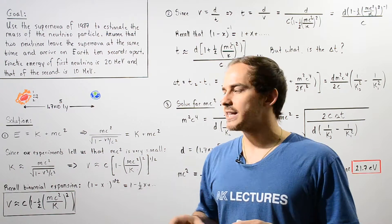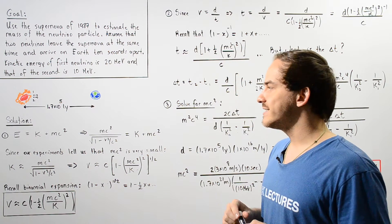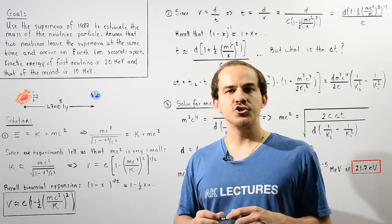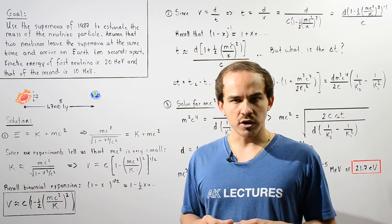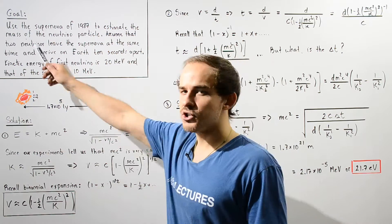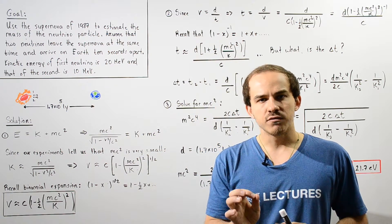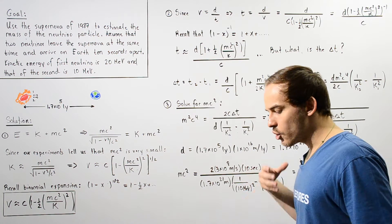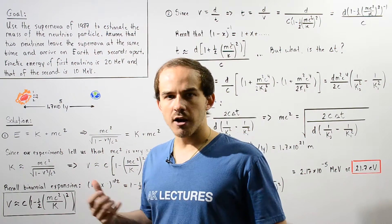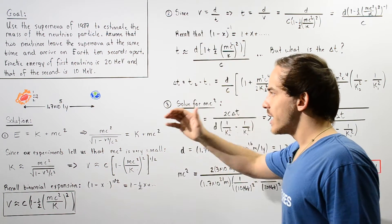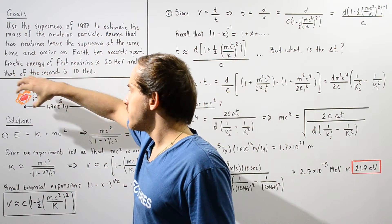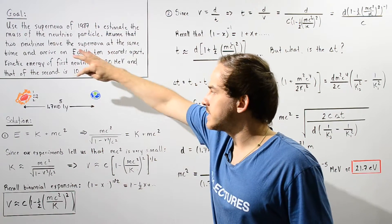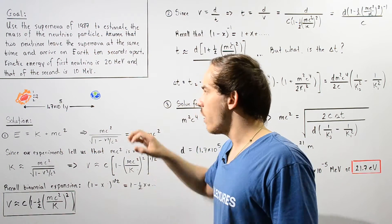Let's take a look at the following example in which we're going to estimate the rest mass energy of a single neutrino particle. Our goal is to use the supernova that took place in 1987. We have a supernova that took place a distance of 1.7 times 10 to the 5 light years away from Earth.